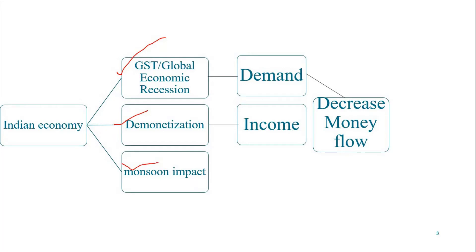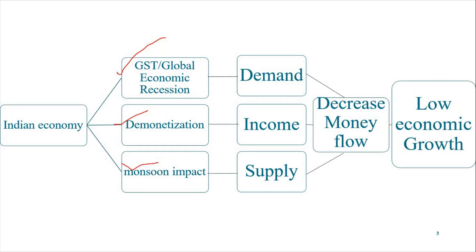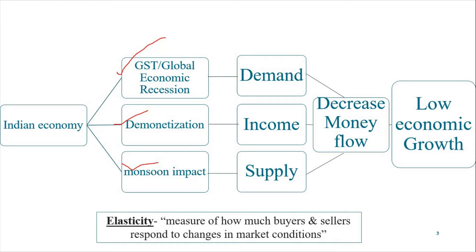Because of demonetization, people were not getting their income on time. That decrease in income led to decreased demand and decreased monetary flow. The third reason is the monsoon impact — when monsoon is late, or there is drought or flood, that affects crops and farmers' output, which decreases the supply of commodities and leads to an economic slowdown.